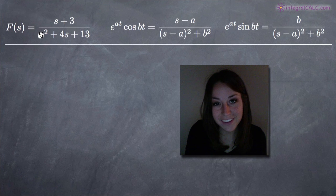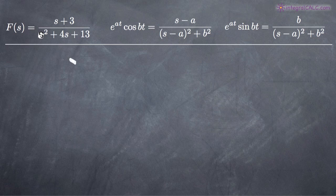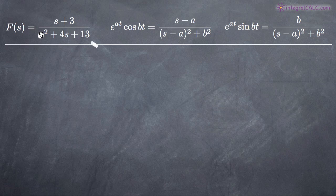Hi everyone! Welcome back to integralcalc.com. Today we're going to be talking about inverse Laplace transforms. In this particular problem we've been given the function f of s equals s plus 3 divided by s squared plus 4s plus 13. This function has already been put through the Laplace transform process and what we've been asked to do is reverse that process and find the original function that we must have put through the Laplace transform process to get here to f of s.